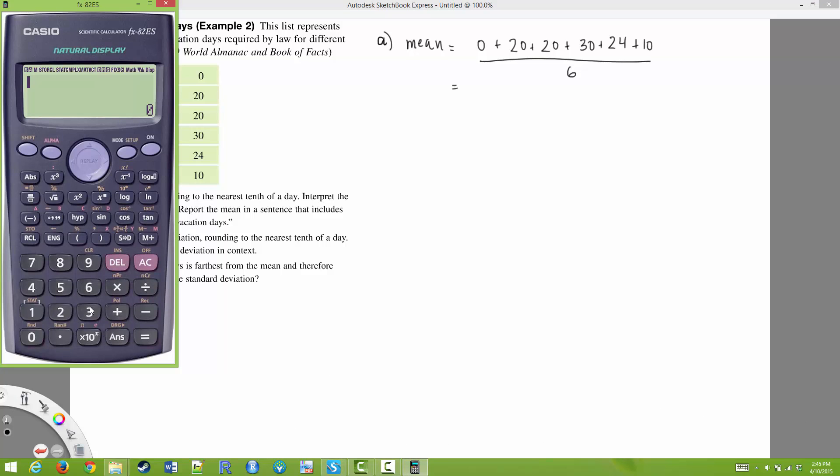So I'm going to pull up my calculator here and I'm going to enter 20 plus 20 plus 30 plus 24 plus 10. Get a total of 104 and we have a total of six numbers. So I get 17.33333.